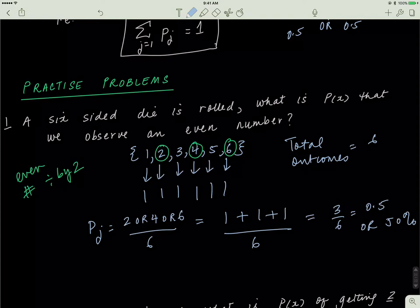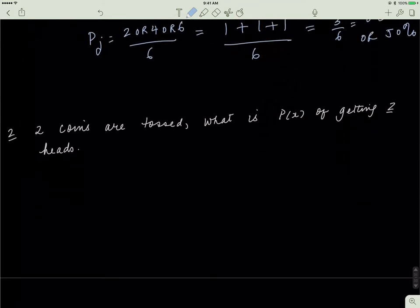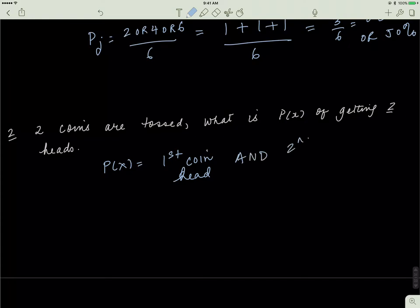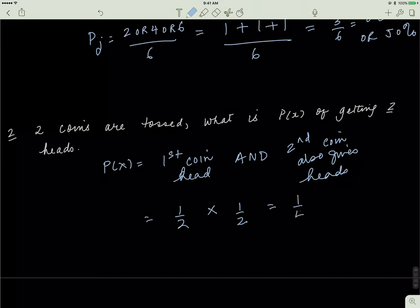Second problem: two coins are tossed. What is the probability of getting exactly two heads? We need the first coin to give heads AND the second coin to also give heads. The probability of each coin giving heads is 1/2. Since 'and' means multiply, the probability of exactly two heads is 1/2 × 1/2 = 1/4, or 0.25, which is 25%.